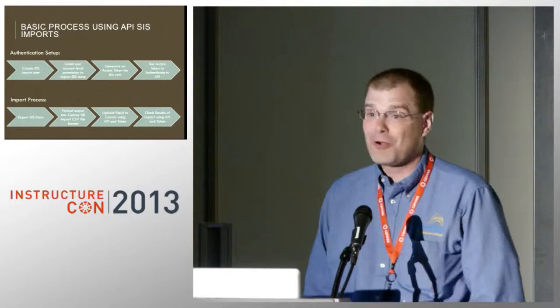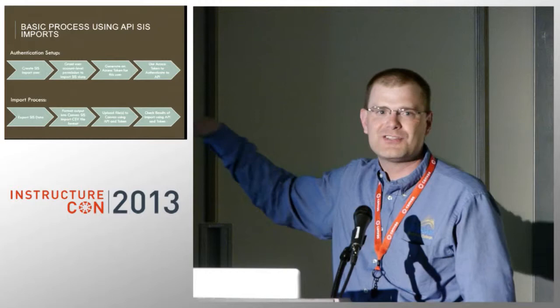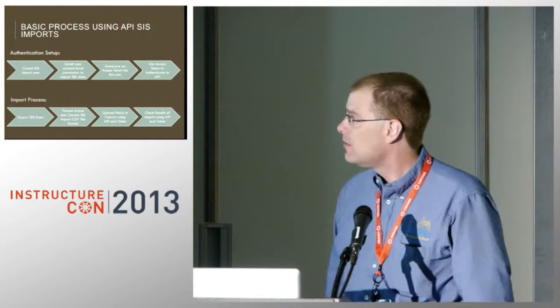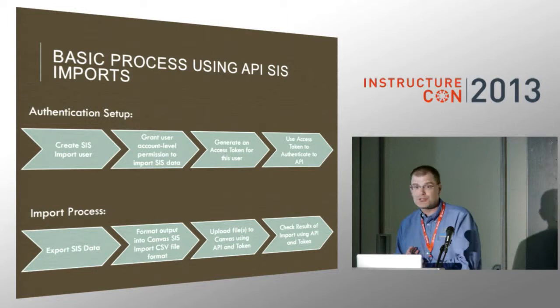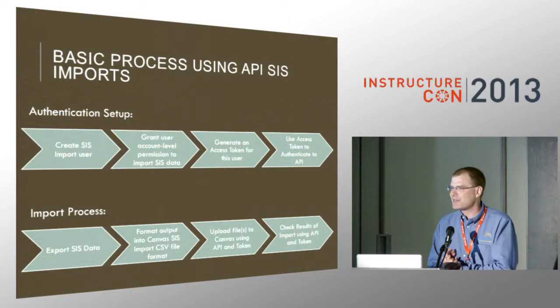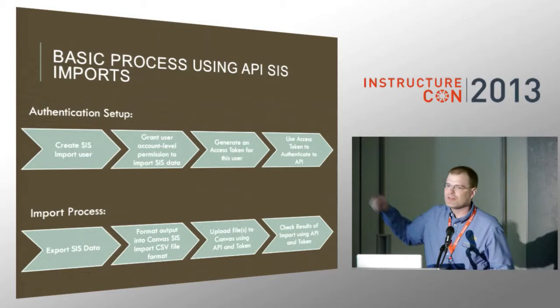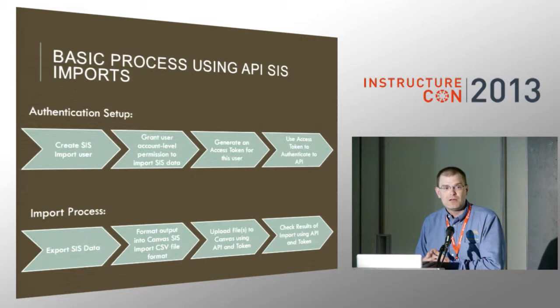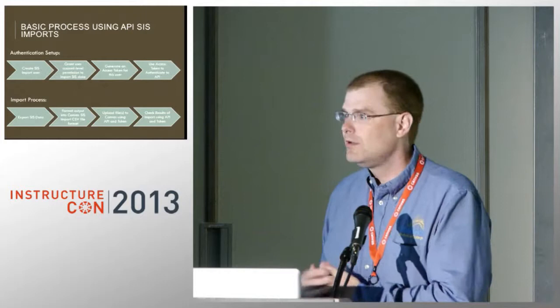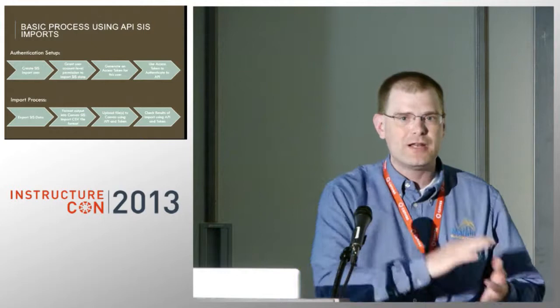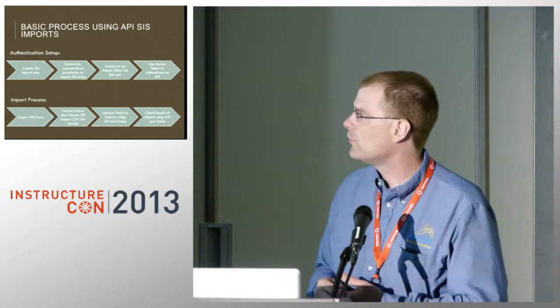What you're probably here to learn about is the automated approach — we want to do this through the API so that we don't have to touch it unless we have to intervene for some manual reason. The first thing you need to do is get authentication set up. You can either use a pre-existing user, though I probably would not recommend this. I like to create a user just for my SIS imports and then really restrict the permissions on that account to just what we need. I'll have to create a role inside of Canvas — an account-level role — and then assign the appropriate SIS management permission to that role, and then assign the role to the user.